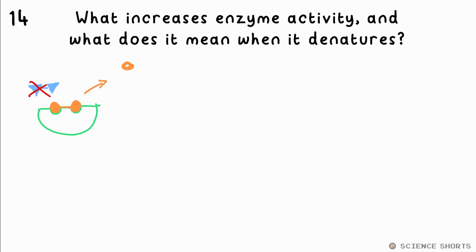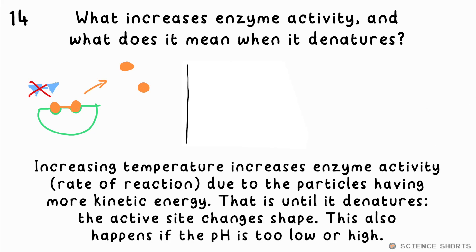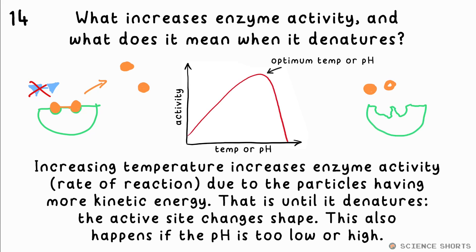What increases the rate of activity of an enzyme and what does it mean when it denatures? Increasing temperature increases the activity of the enzyme, until the temperature gets so high that it denatures — the active site changes shape and it no longer works. Enzymes also have an optimum pH; too high or too low a pH and the enzyme will denature.